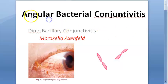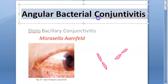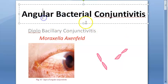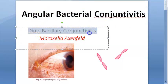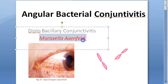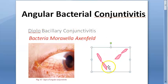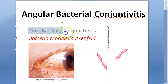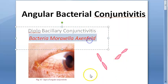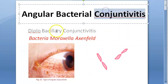In this video, let us look at what angular bacterial conjunctivitis, or ABC, is. Angular conjunctivitis is also called diplobacillary conjunctivitis. It is caused by the bacteria Moraxella axenfeld. These bacteria are diplobacilli arranged end to end, which is why it is called diplobacillary conjunctivitis.